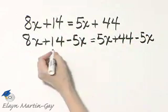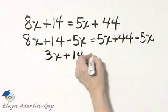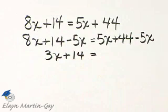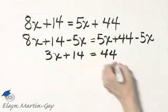Now watch what happens. 8x minus 5x, that's 3x plus 14, is equal to 5x minus 5x is 0x or 0, like I wanted, and I have 44.